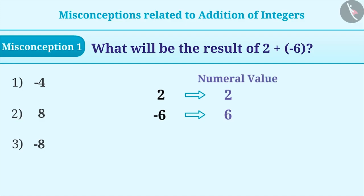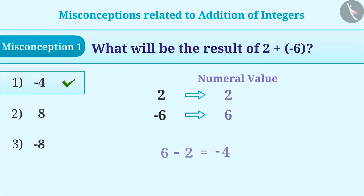Then we will subtract the smaller numeral value from the greater numeral value and we will put the sign of the greater numeral value to the result. By doing so, we get the correct answer, option 1, which is minus 4.